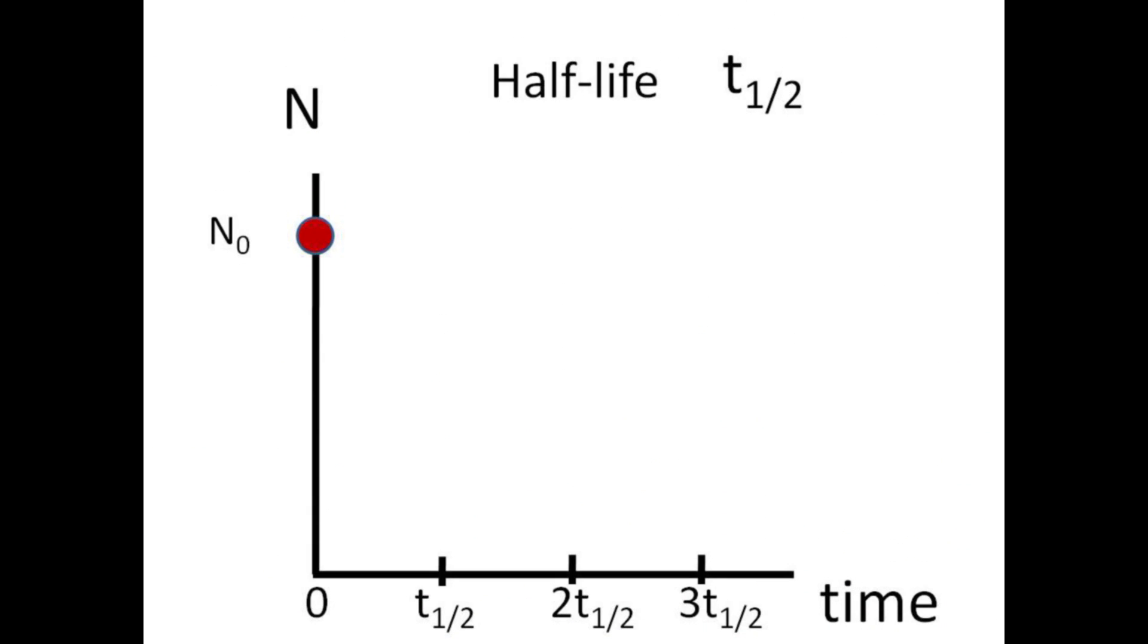If one begins with N0 radioactive nuclei at time t equals zero, then after a single half-life there will be N0 over two nuclei remaining. After two half-lives, one quarter of the nuclei remain, and after three half-lives there will be only one eighth of the original number of radioactive nuclei left.